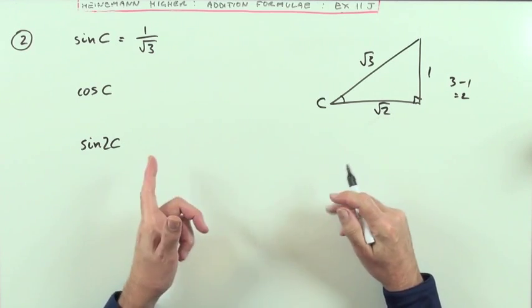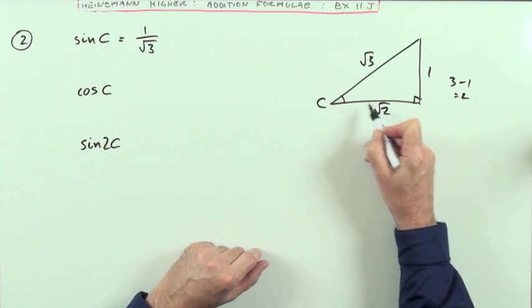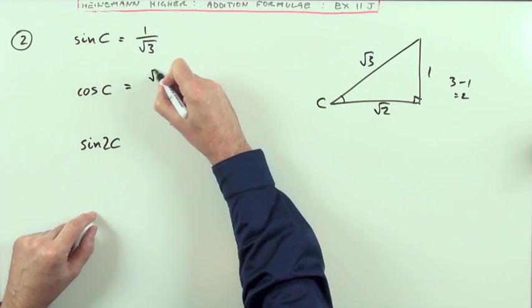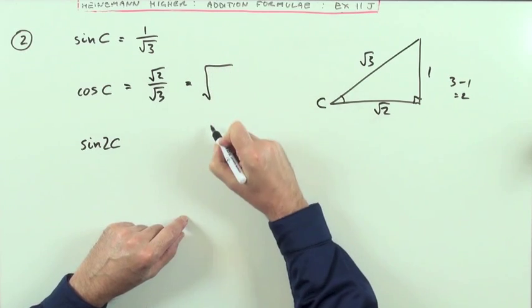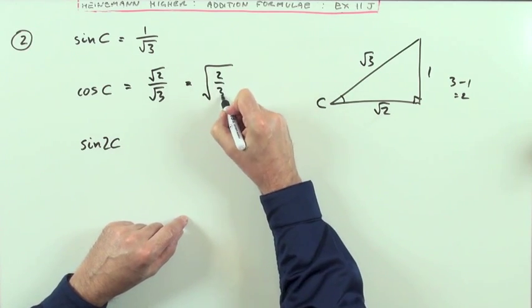And then straightforwardly, if I want the cosine, it's the adjacent to the angle, root 2 over the root 3. So the cosine would be root 2 upon root 3. Or if you have a preference, just make it the one big square root of 2 thirds.